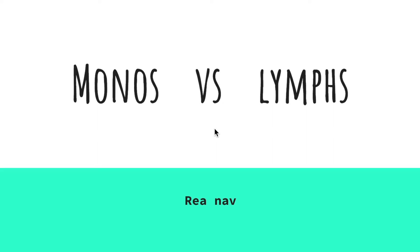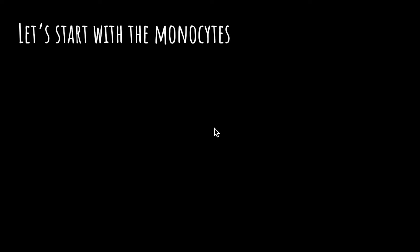Hi, so today we are going to go over the differences between monos and lymphs. This video should be able to help you see the differences between them and the reactive forms of the lymphs too. When you look at the scope you don't really know what you're going to get, but hopefully this can help you.